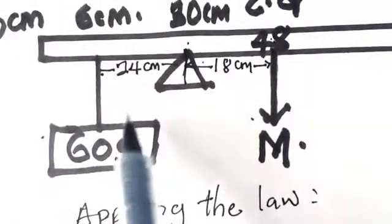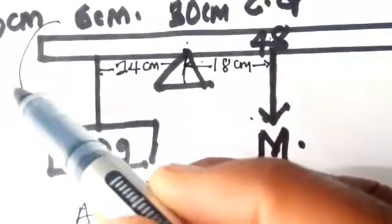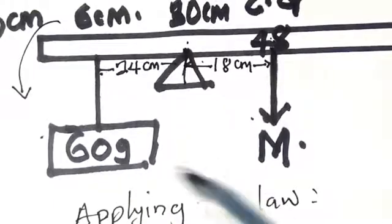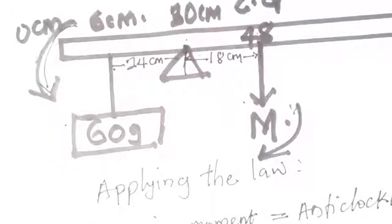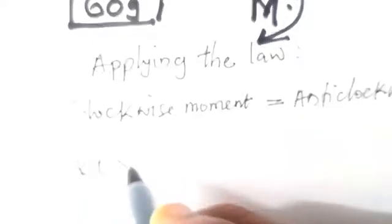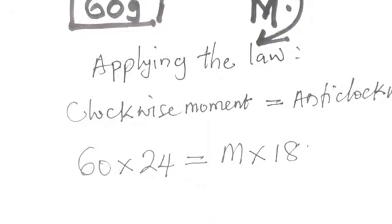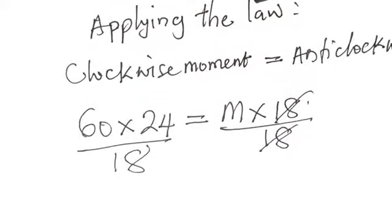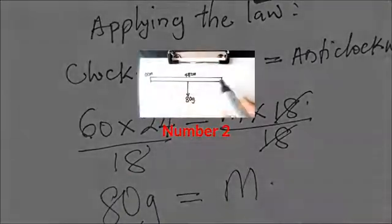When you hang this mass of 60 grams at this meter rule, this meter rule will fall as if it's falling down. If it is falling down, the weight is acting in this direction. We can call this clockwise moment and this one anticlockwise moment. Clockwise moment will be 60 multiplied by 24 and that is going to be equal to the mass of the meter rule multiplied by 18. When you divide both sides by 18 to make M the subject of the formula, the 18 will cancel 18 at the right-hand side.